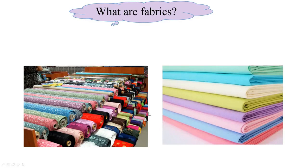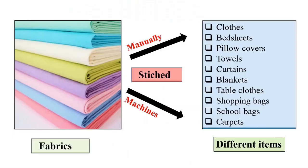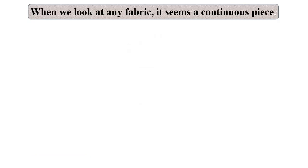Whenever you visit a garment shop, you must have noticed bundles of clothes lying there — these are called fabrics. These fabrics are stitched either manually with a sewing machine or in machines in factories to get different items such as clothes, bed sheets, pillow covers, curtains, blankets, shopping bags, carpets, etc.